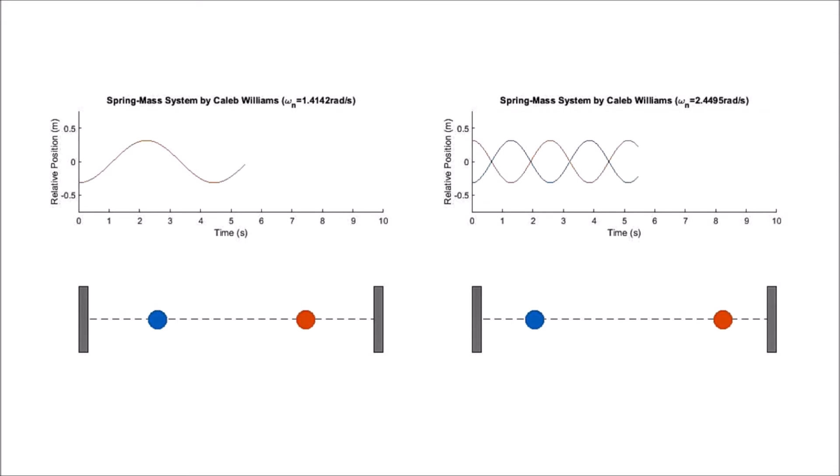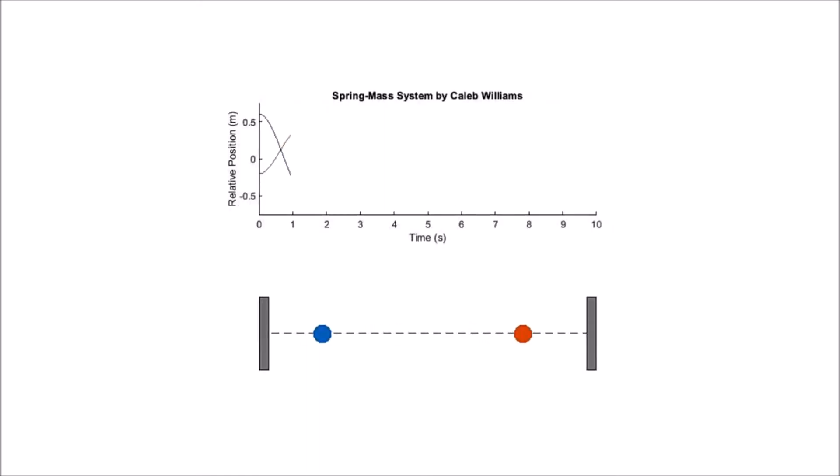In the first mode, both masses move together, whereas in the second mode, the masses move opposite each other and were displaced the same distance but in opposite directions. Any other displacement ratio will result in non-harmonic motion, as shown here. So how do we get these mode shapes, or the initial displacements that result in motion in a given mode?